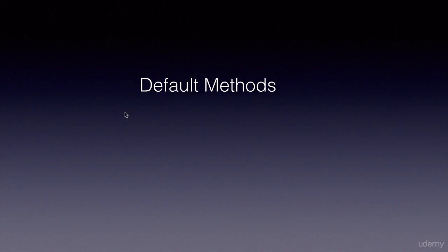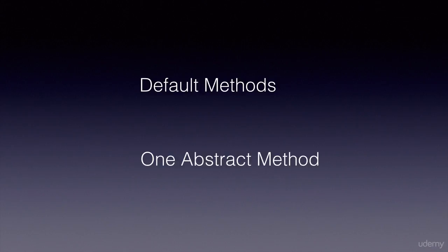Starting Java 8, we can also add default methods to interfaces, which you will learn later on. We can define any number of default methods in a functional interface, but there should be one and only one abstract method. Only then do we call it a functional interface.